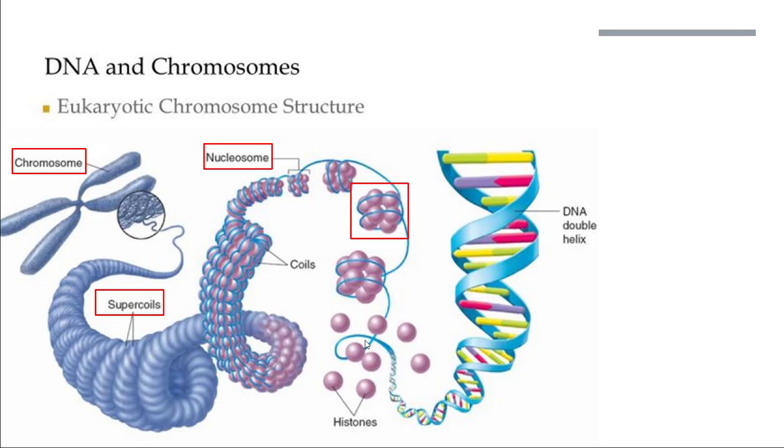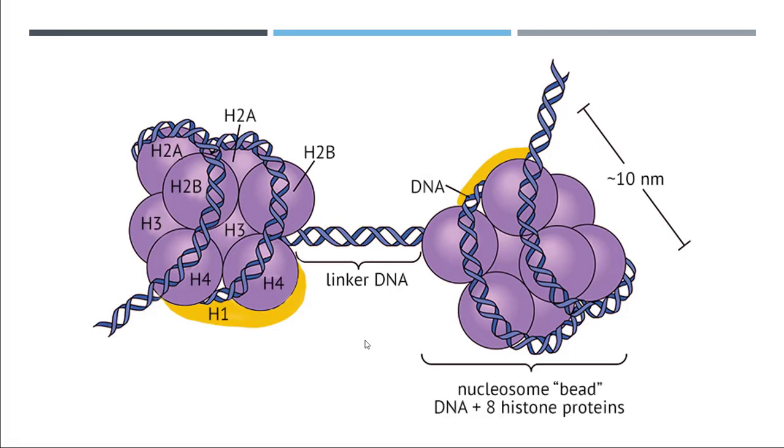The DNA double helix wraps around histone proteins twice. Let's take a closer look at the nucleosome. When I examine it closely, I find there are eight histone proteins present in a single nucleosome. Let's count: one, two, three, four, five, six, seven, and eight.